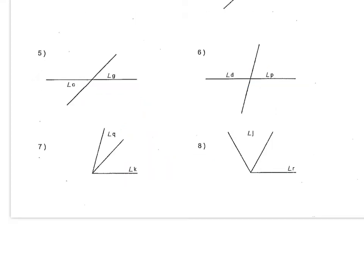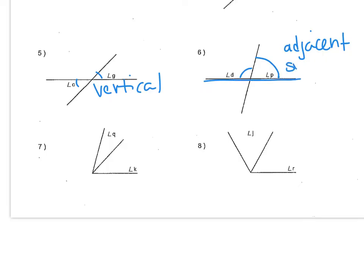Looking at a couple more examples — number 5, angle C and angle G are opposite of each other, so these are vertical angles. Looking at number 6, angle D and angle P are adjacent angles because they're next to each other. And since they make a straight line, they are also supplementary.